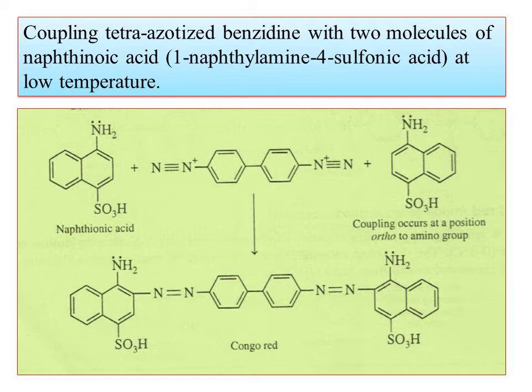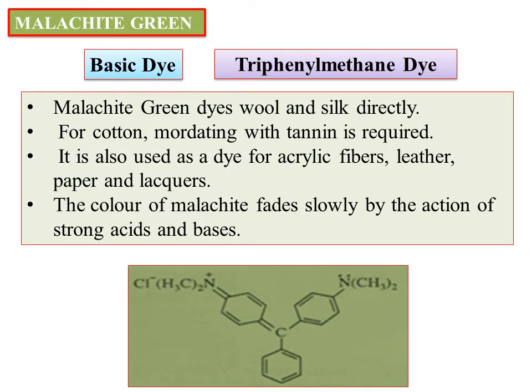Tetra-azotized benzidine and add 2 moles of naphthaloic acid and the reaction will be at 0 to 5 degrees centigrade. We have reactions with beta-naphthalate; instead of beta-naphthalate, naphthaloic acid will be converted to Congo Red. The structures look very huge but the reactions are very simple.